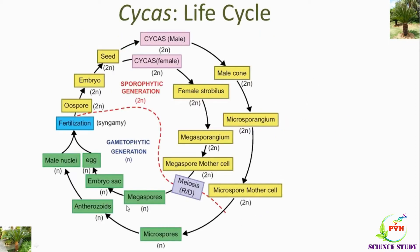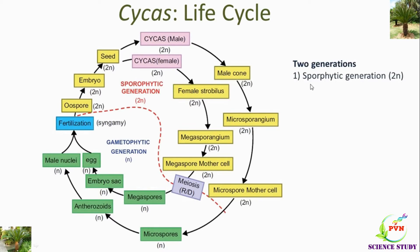This is a schematic representation of the life cycle of Cycas. The life cycle of Cycas is also known as alternation of generations of Cycas, because here two generations are alternating with each other. We will see the two generations in the life cycle of Cycas one by one.